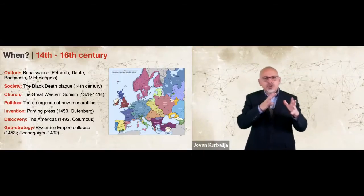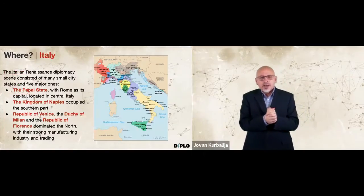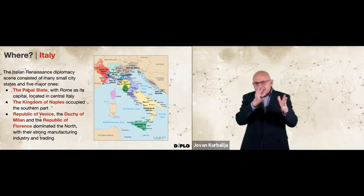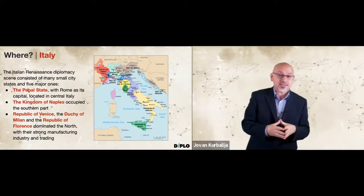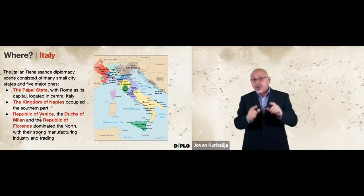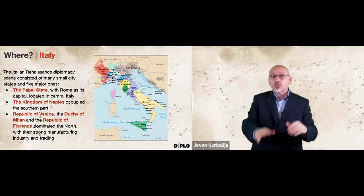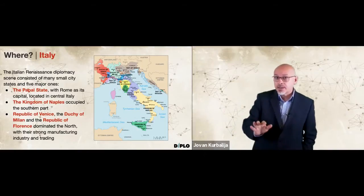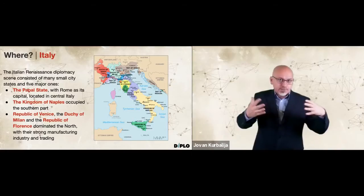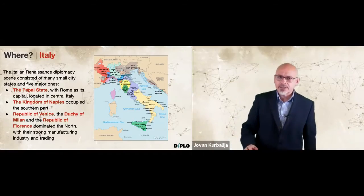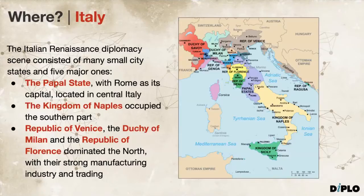Let's see geographically how it looked. We sketched the wider context in which Renaissance diplomacy appeared among Italian city-states in the 15th century, which is considered the beginning of modern diplomacy as we know it today — modern diplomacy with permanent diplomatic missions, embassies. At that time, we also had a rudimentary ministry of foreign affairs built around diplomatic archives. It's interesting to highlight the importance of diplomatic archives.